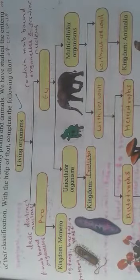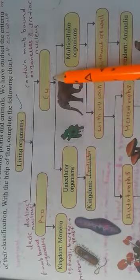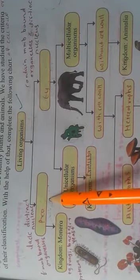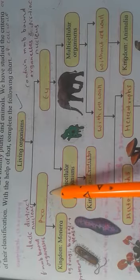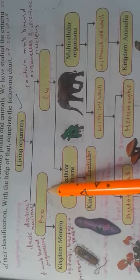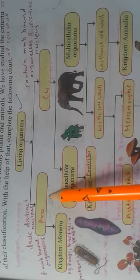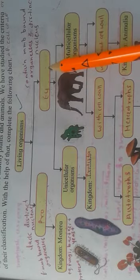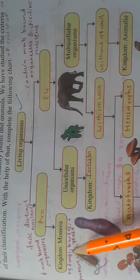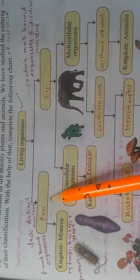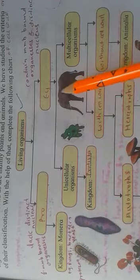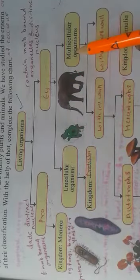You all know that prokaryotes means organisms having a primitive type of nucleus. 'Pro' means before and 'karyote' means nucleus — so before nucleus, meaning the nucleus is not properly developed and membrane-bound organelles are absent. In case of eukaryotes, membrane-bound organelles are present and a distinct true nucleus is present. In Kingdom Monera, all the prokaryotes are present — for example, bacteria.